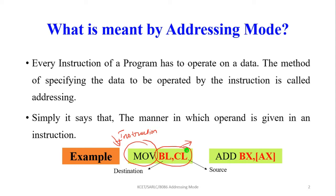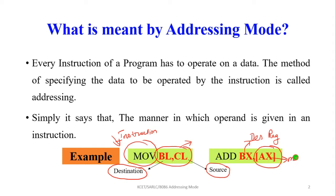For example, in the instruction MOV BL, CL, the right-hand side is always the source register and the left-hand side is always the destination register. Another example: MOV BX, [AX]. Here BX is the destination register, and the square bracket indicates memory — the memory address is present inside the AX register.